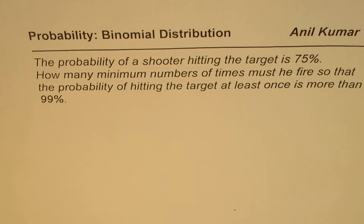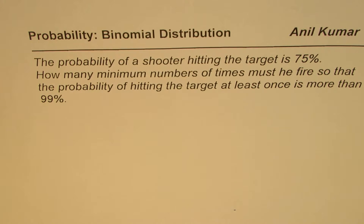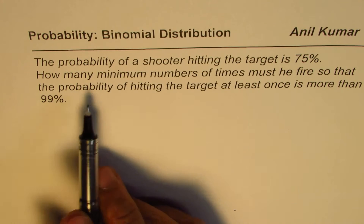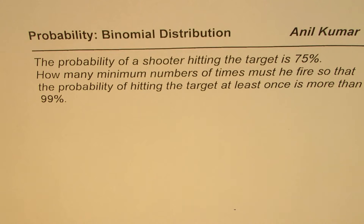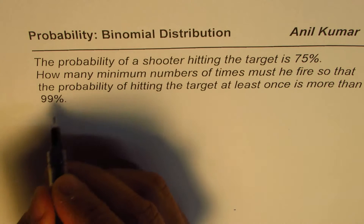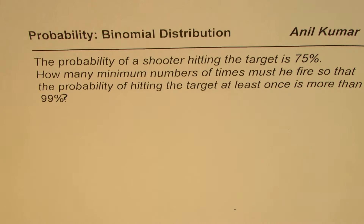I'm Anil Kumar and this video is for my student Melissa, who wants to understand how we can reorganize the formula of binomial distribution and solve some questions. The question here is: the probability of a shooter hitting the target is 75 percent — how many minimum numbers of times must they fire so that the probability of hitting the target at least once is more than 99 percent?